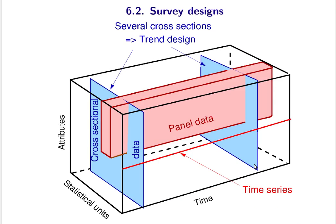Regarding survey designs: the simplest case is time series, for example a traffic count — just automated measurements. The population is represented by a big box, meaning the set of all statistical units to be interviewed. This may be persons, households, or cities. For time series, you just record data continuously in time for a few properties of the statistical units, giving a thin line over all time at perhaps only a few locations.